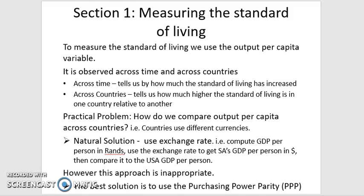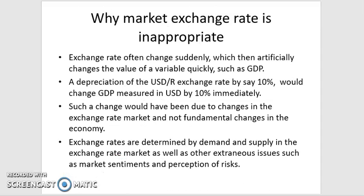The natural solution would be to use the exchange rate — for example, converting South African GDP per person in rands to dollars using the exchange rate, then comparing it to US GDP per person in dollars. However, this approach would not hold, so we need a better solution: purchasing power parity, or PPP.